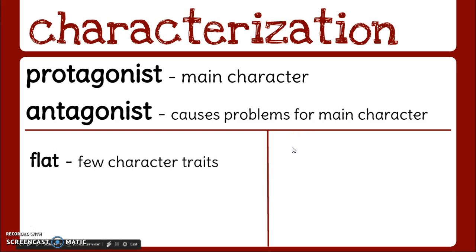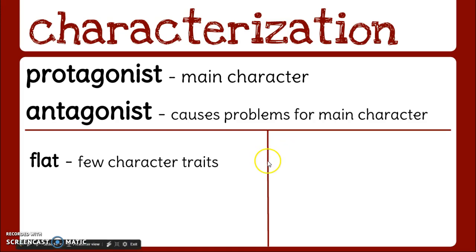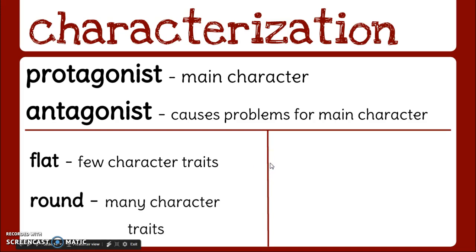Some terms we use to describe our protagonist and antagonist are flat — where a character has very few character traits, and if you were asked to describe them you could only come up with one or two words — versus round, in which they have many character traits and lots of adjectives to describe them.